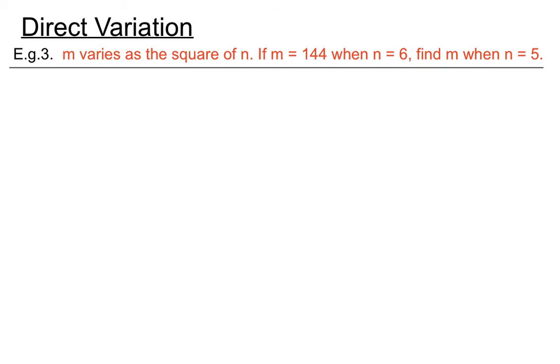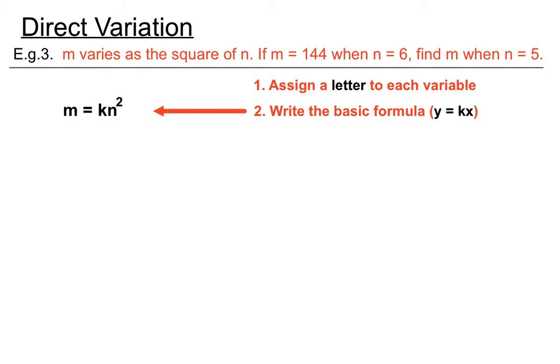This one we'll have to read carefully. Don't skip over the first sentence here because, can you see, we've got M varying this time not just as N. We've got M varying as the square of N. So careful with that. So normally, we assign a letter to each variable. This one's got its own letters so we won't have to worry. Write the basic formula. Now the basic formula usually is Y equals KX but I think, seeing we've got a square here, we're kind of comparing it instead to KX squared. We've got to make sure we have that squared bit there otherwise we're not going to get it right. We've got M equals KN squared. M's out the front and we want to find M as well which is very helpful.